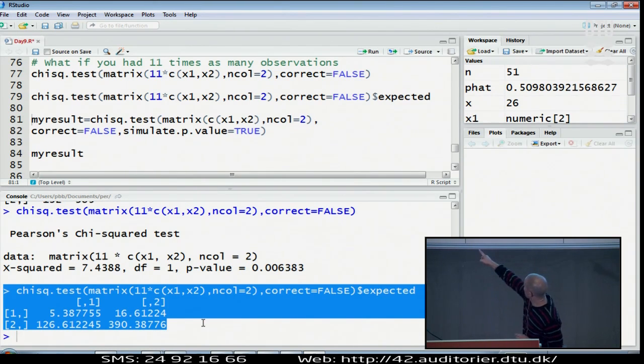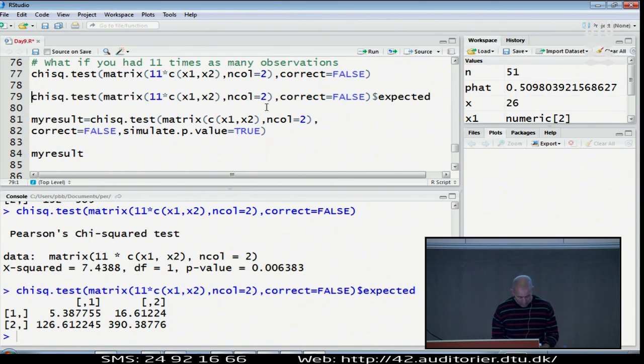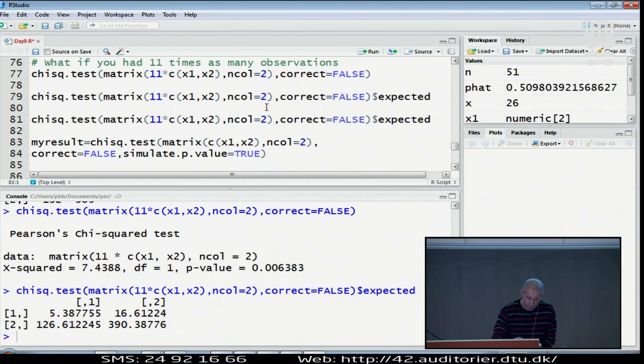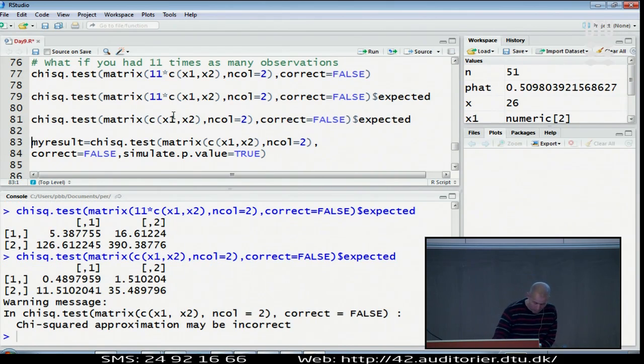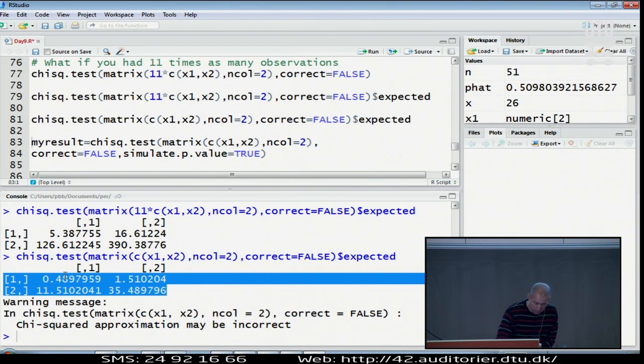The expected value in the zero cell becomes larger than five if I did the same computation with the artificially increased data. If I do it without artificially enhancing my data and look at the expected values - look at this. The expected values for Romney in this small data set is only 0.5 and 1.5, which is much too low. So the chi-square doesn't work.